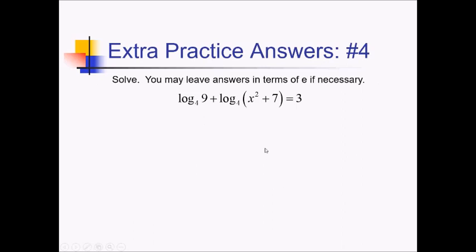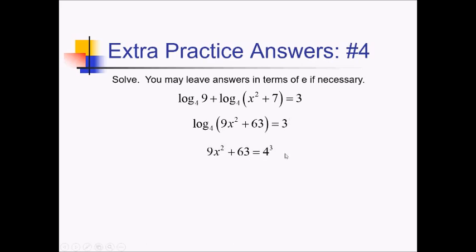To solve this equation, I'm going to start by getting a single log on the left side. I can combine these by adding the logs together — by multiplying the things inside the logs. So I'm just going to write this as log base 4 of, and now big parentheses, 9x squared plus 63. All that equals 3. To get rid of this log, I can now raise 4 to both sides of the equation. That's going to cancel out log base 4, leaving me with just 9x squared plus 63 on the left side, and 4 to the third power on the right side.